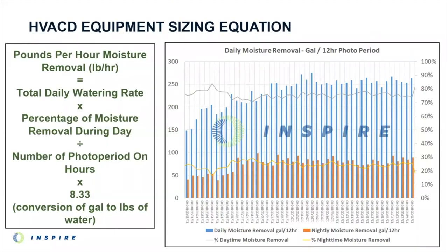The heart of this intimacy starts with data and sizing your equipment right. You need real data from real rooms to help with the task. We need to figure out the peak pounds per hour of moisture removal the HVACD system has to provide. We sit down with the project team and get the master grower to give us the total daily watering rate — that is, gallons of water that are going to be pumped into a room on a given day. We multiply that by the percentage of moisture that comes out during the period's highest transpiration, which is when the lights are on. Then we divide that number by the number of hours of the photo period. And because we're looking for a total daily watering rate in gallons, we multiply everything by 8.33 to convert from gallons to pounds, because we're looking for pounds per hour.